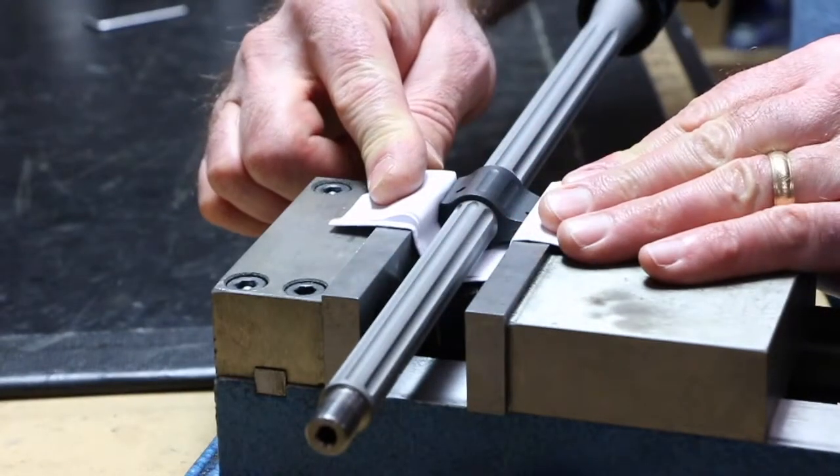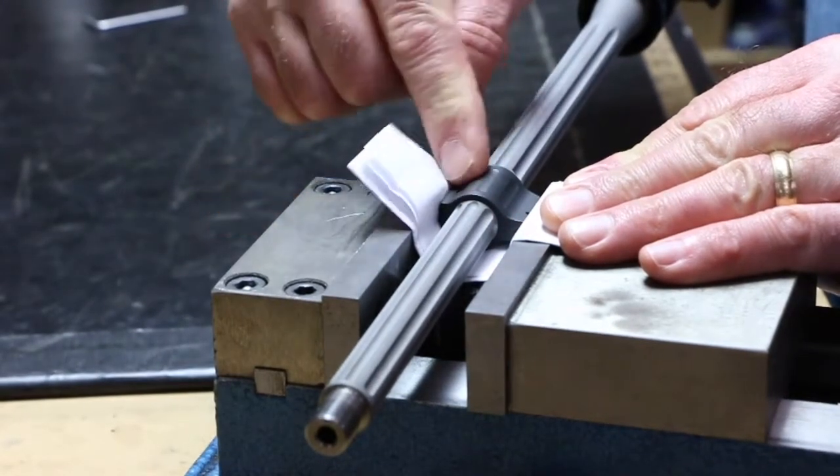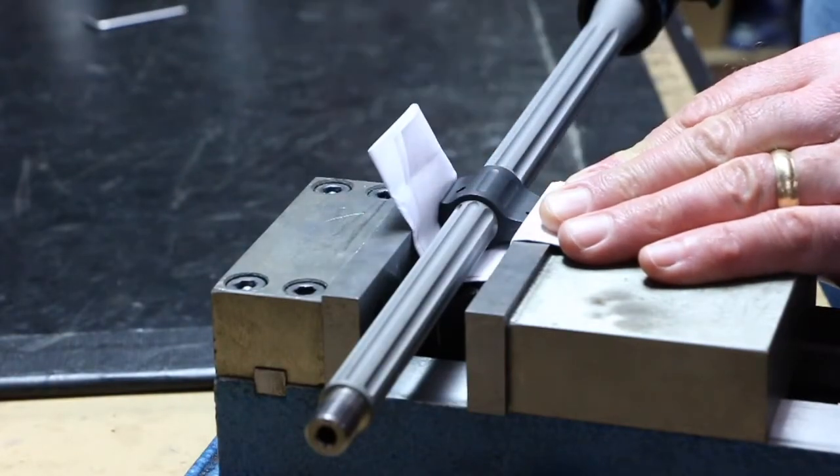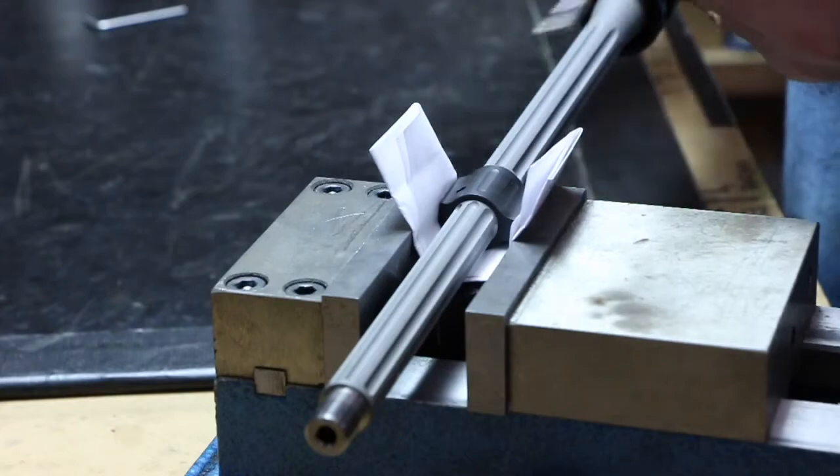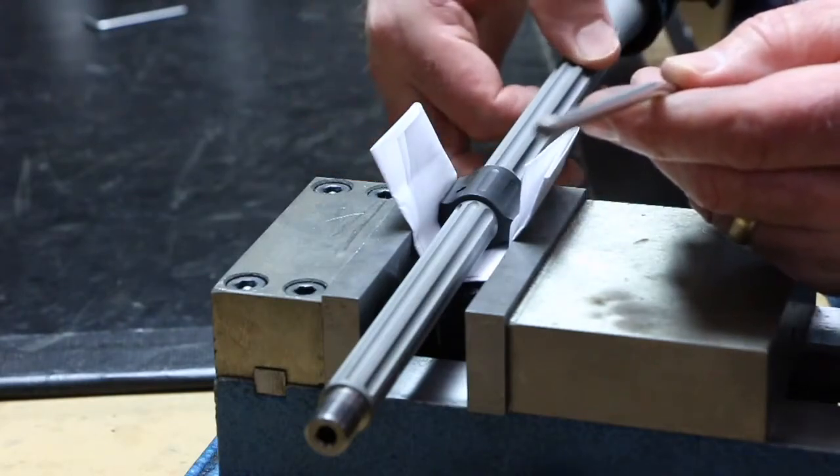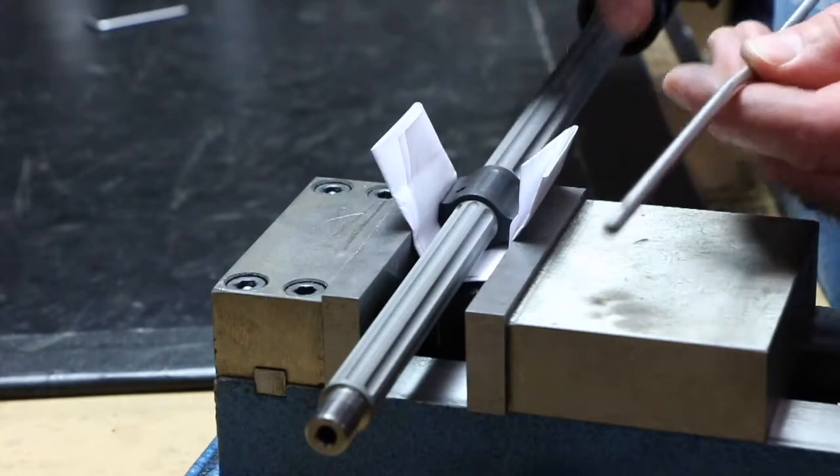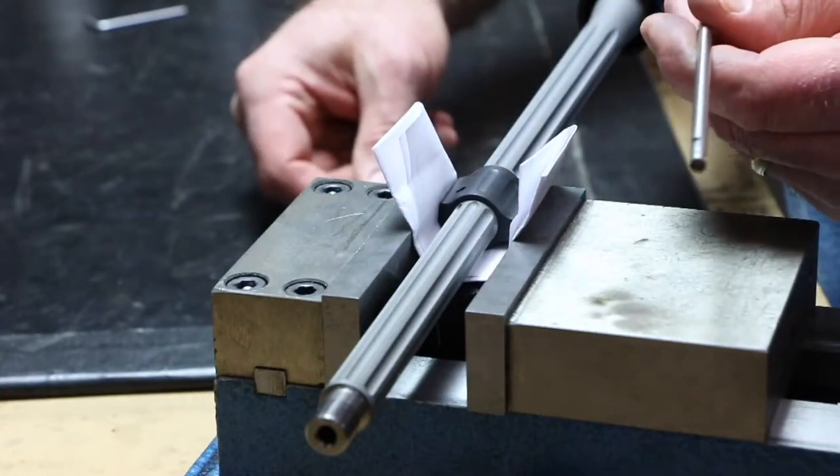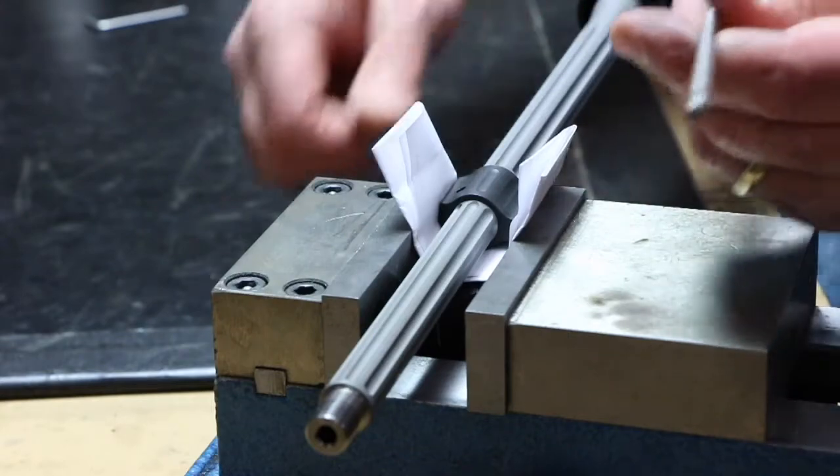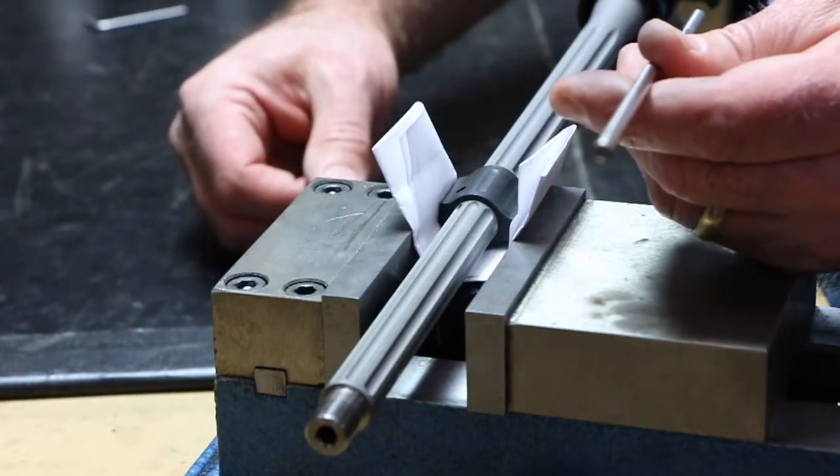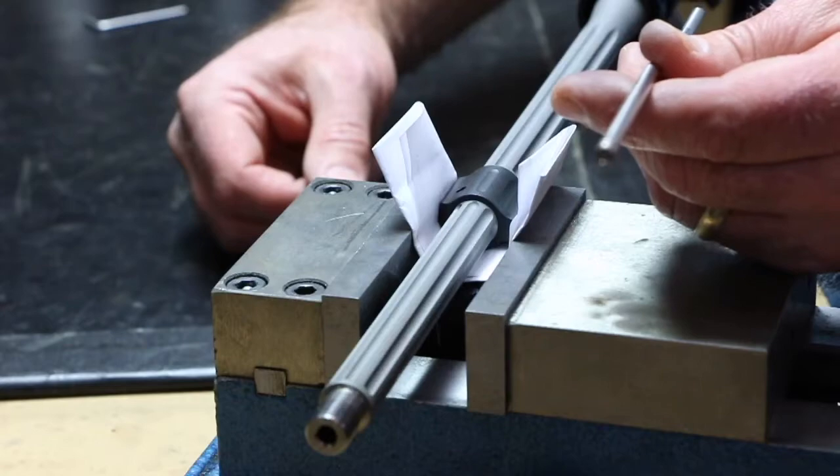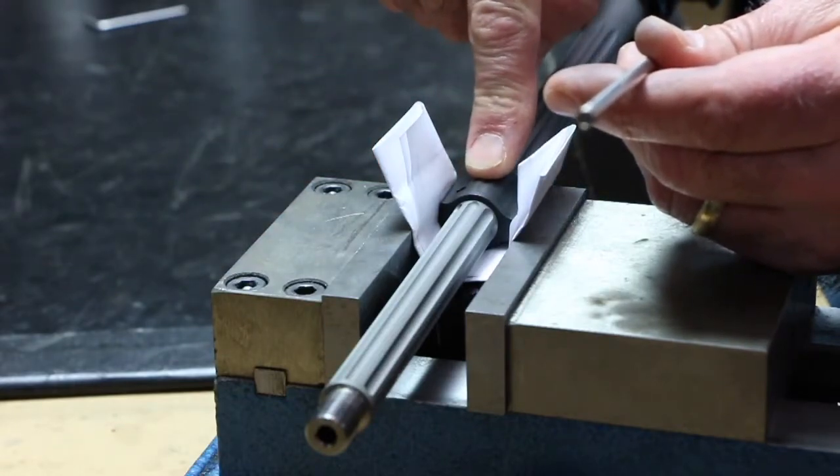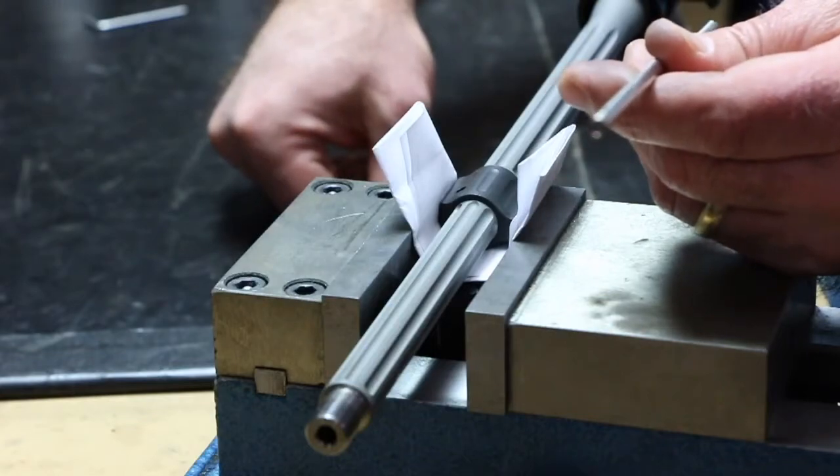This is how I like to install the gas tube and the gas tube roll pin and the gas block roll pin. With the exception of, if you have a pistol length system, you will need to install the gas block with the gas tube in it already because there's no way to bend it in there. There's just not enough room. So remember, if you have a pistol length gas system or shorter, then make sure you install your gas tube first before you put your gas block on.